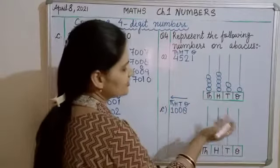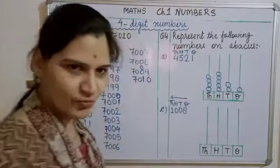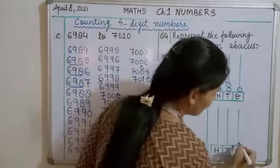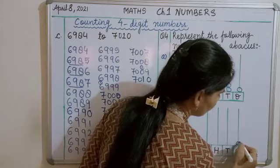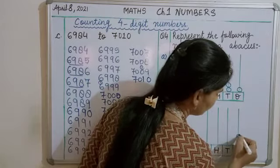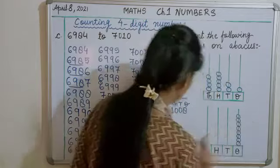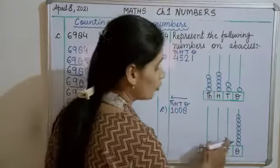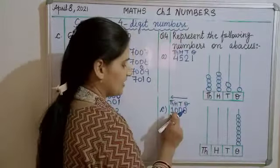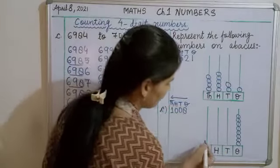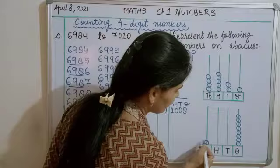Start करते हैं last digit से और leftward direction में move कर रहे हैं. 1s place 8, तो 1s place में हम 8 beads, 8 circles draw करेंगे. 1, 2, 3, 4, 5, 6, 7, 8. 10s place 0, don't draw anything. 100s place 0, don't draw anything. And 1000s place is 1. So draw 1 circle.